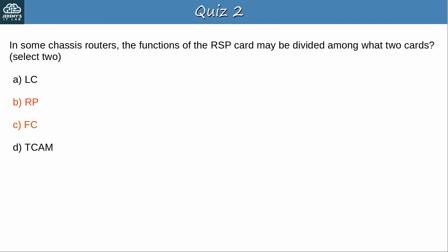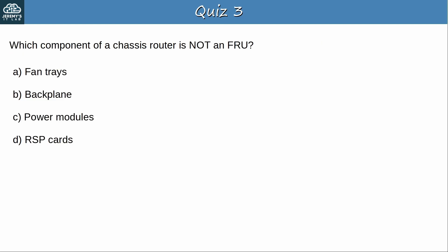Question 3: Which component of a chassis router is not an FRU? The answer is B, the backplane. FRU means field replaceable unit, and it refers to components of a device that can easily be added, removed, and replaced in the field. The backplane is the circuitry on the chassis itself that connects the various cards together, and it cannot be easily replaced. Other components such as fan trays, power modules, RSP cards, line cards, etc. are FRUs and can easily be replaced if one malfunctions.